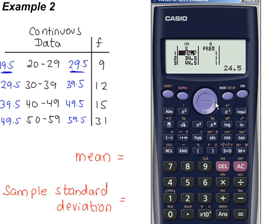Scroll down to go to the top of the table, scroll to the right, enter the frequencies, pressing equals after each one.